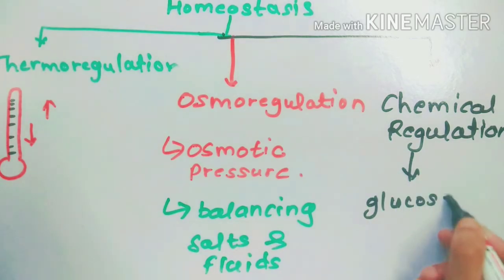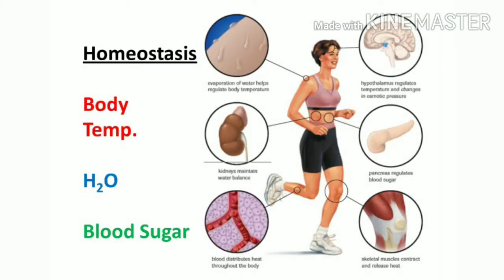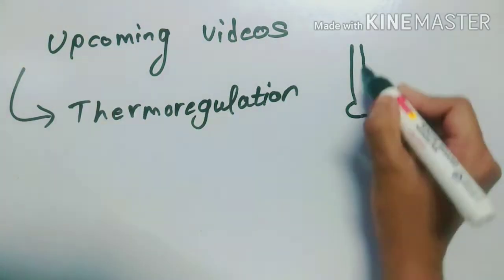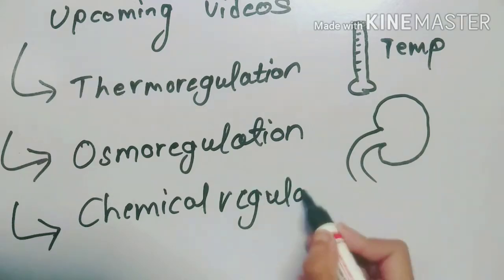Another example is chemical regulation, which is the process of balancing the concentration of chemicals like glucose and carbon dioxide in the body by producing hormones. We'll talk about this type of regulation in upcoming videos.